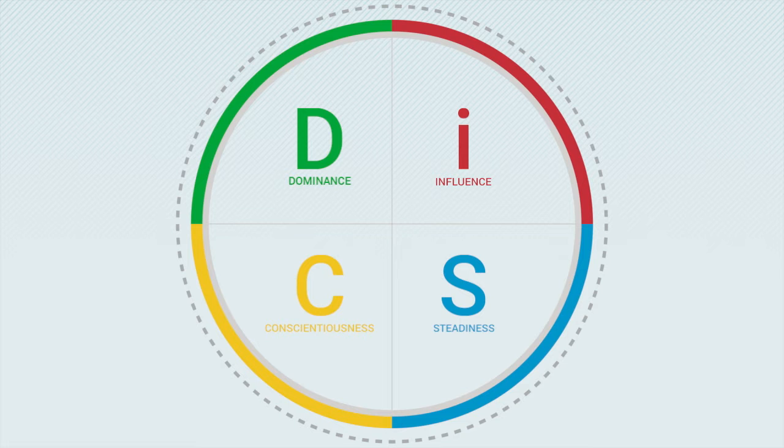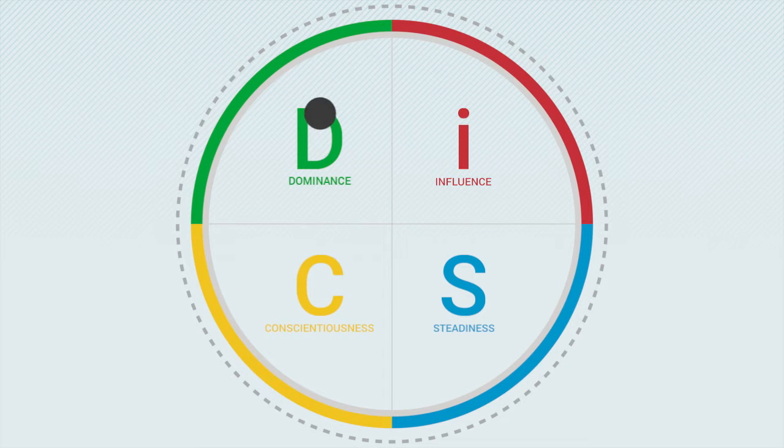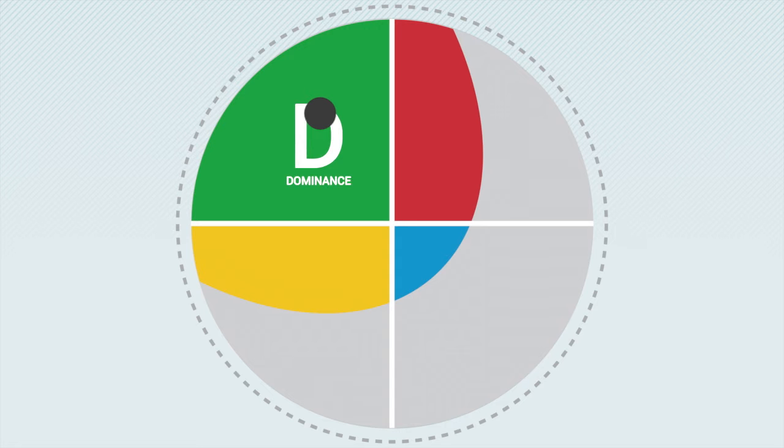Here's how it works. First, everyone has a dot. That dot tells you your DISC style.